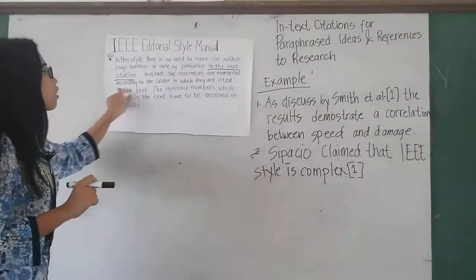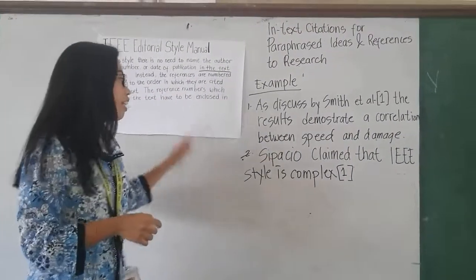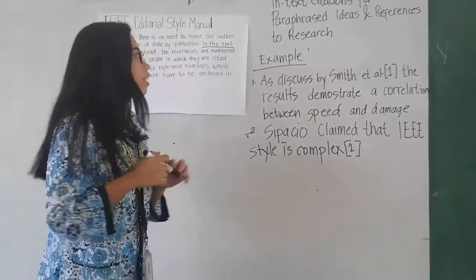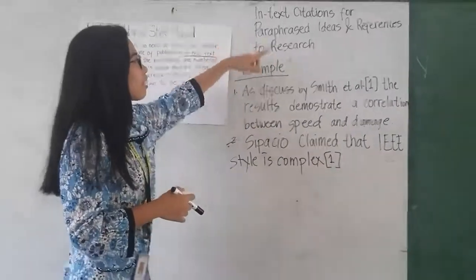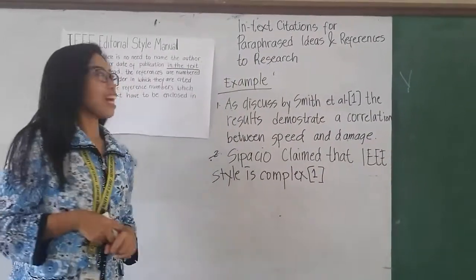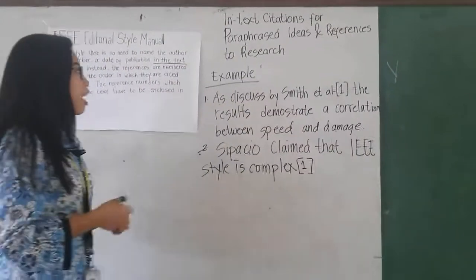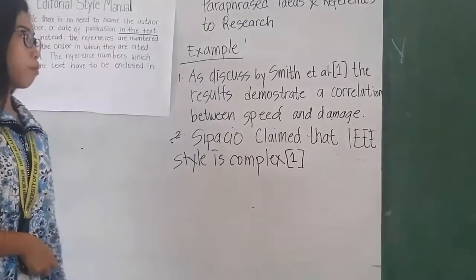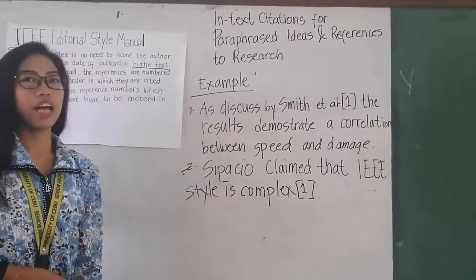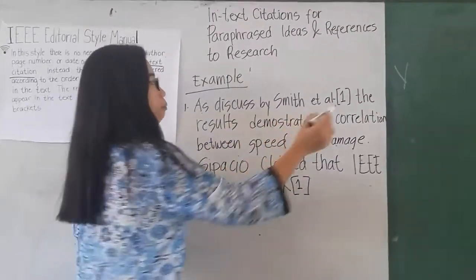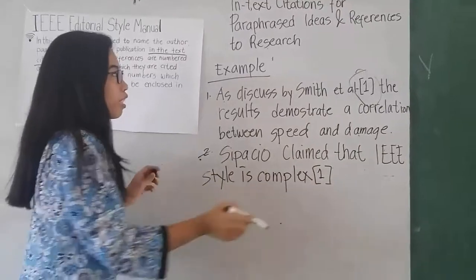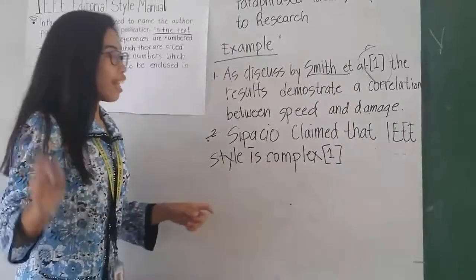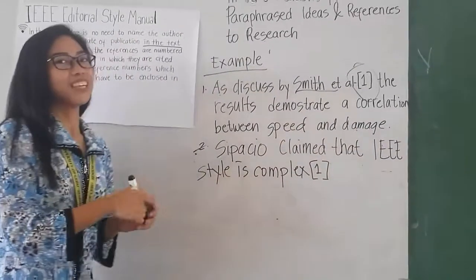The references are numbered according to the order in which they are cited in the text. The next example is the in-text citation for paraphrased ideas and references to research: 'As discussed by speech et al., the result demonstrates a correlation between speech and damage.' This citation uses et al. because it includes two or more authors. That's all. Thank you.